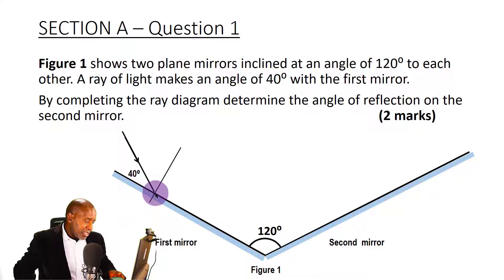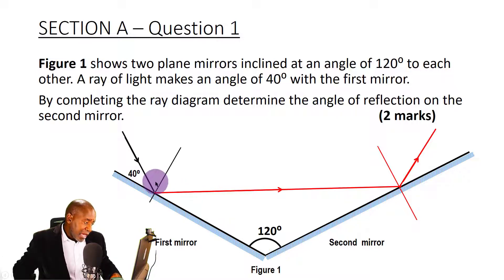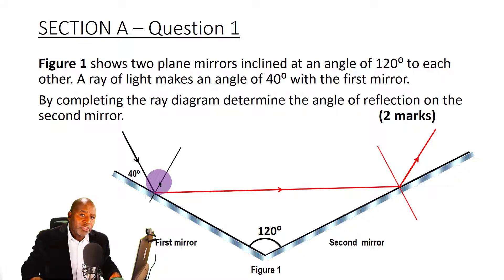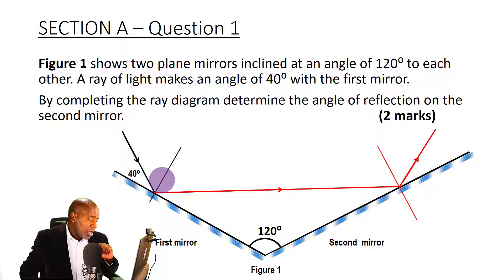As soon as the ray strikes the mirror at this point, it gets reflected and moves this way, obeying the laws of reflection. We need to determine this angle here as the angle of incidence so we can use the first law of reflection. The angle of incidence is the angle between the incident ray and the normal — so this angle here is 50 degrees. Since the normal makes 90 degrees with the mirror, subtracting 40 from 90 degrees gives us 50 degrees.